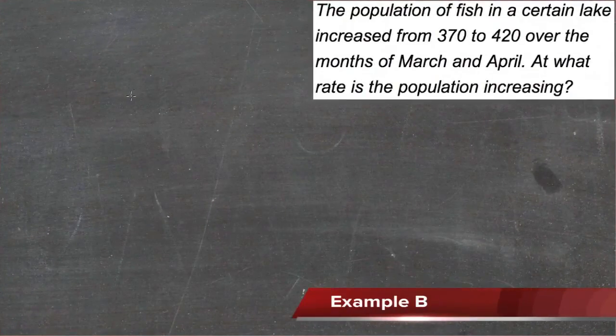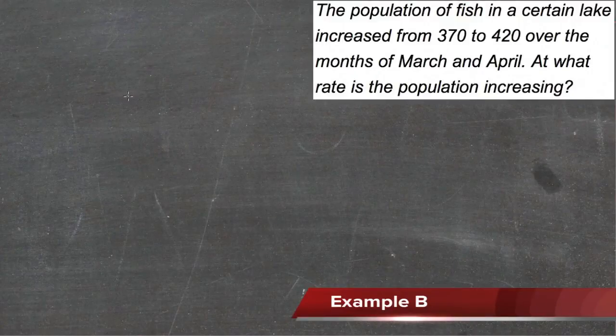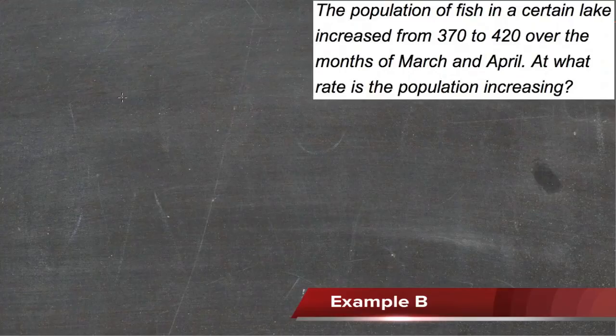The fish population in a certain lake increased from 370 to 420 over the months of March and April. At what rate is the population increasing?